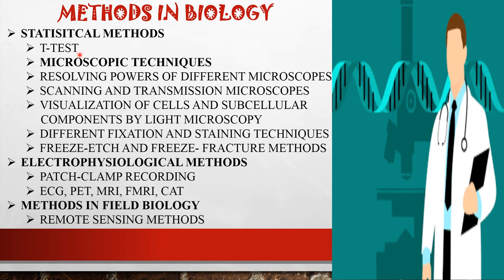Statistical methods like the t-test and chi-square test are important. For microscopy techniques, they will ask which microscope is used to see a protein tagged with a reporter protein to identify its localization to a particular organelle, which microscope gives colorful images of living cells, the resolving power of different microscopes, scanning and transmission microscopy, visualization of cells and subcellular components by light microscopy, and different fixation, staining, freeze-etch, and freeze-fracture methods.